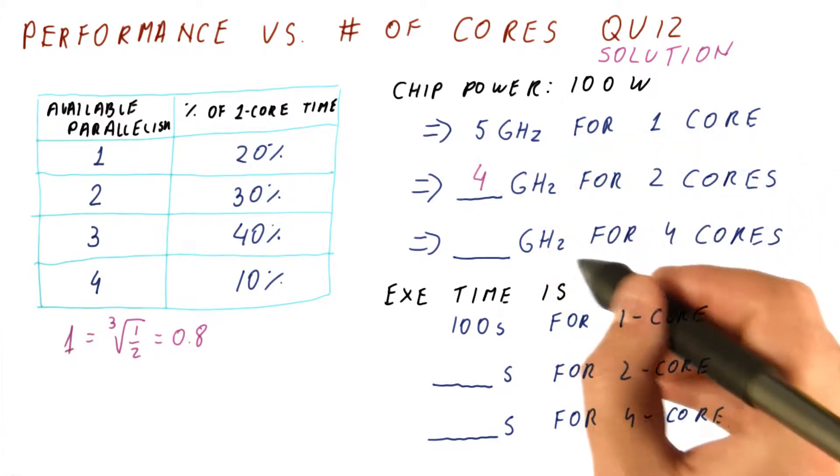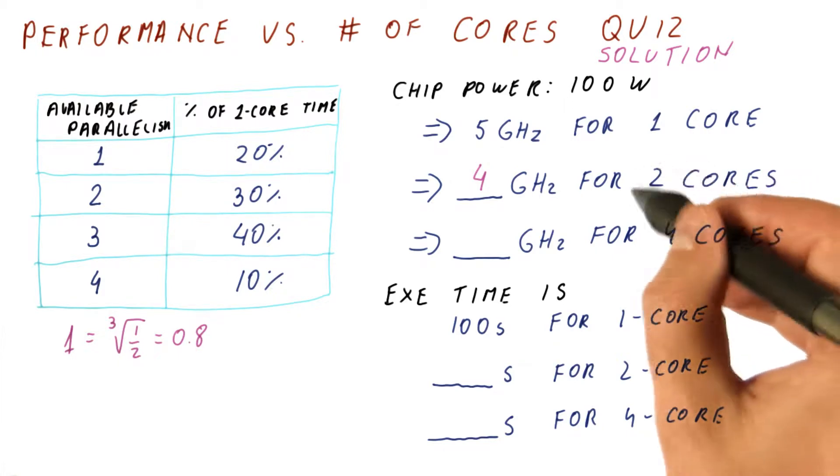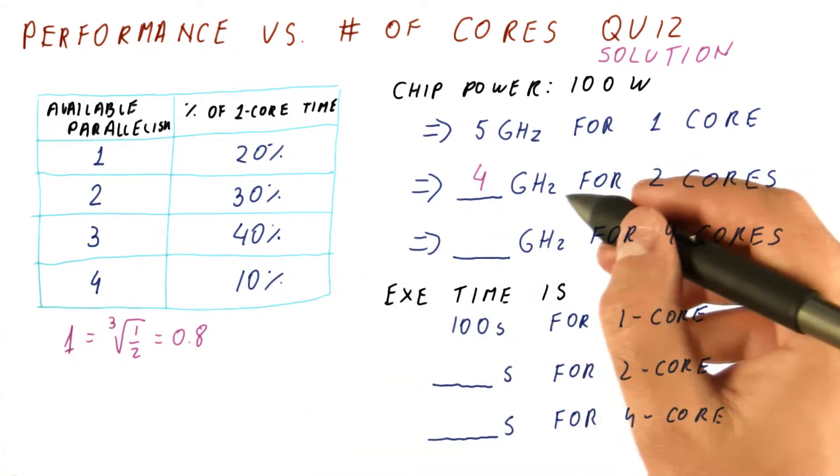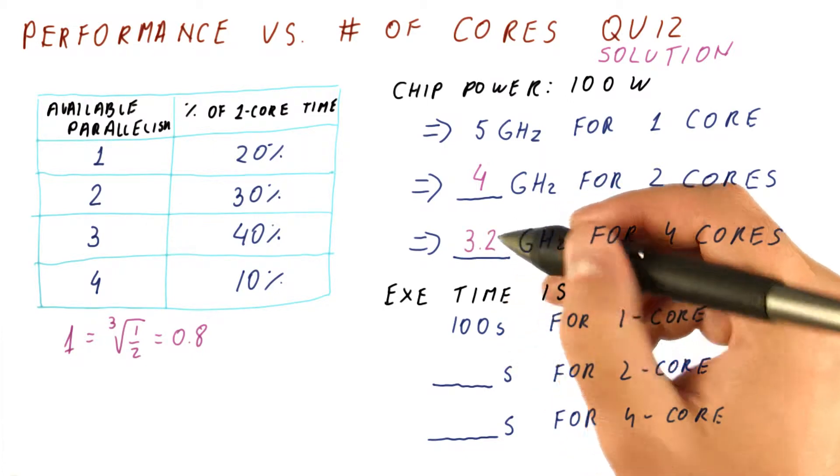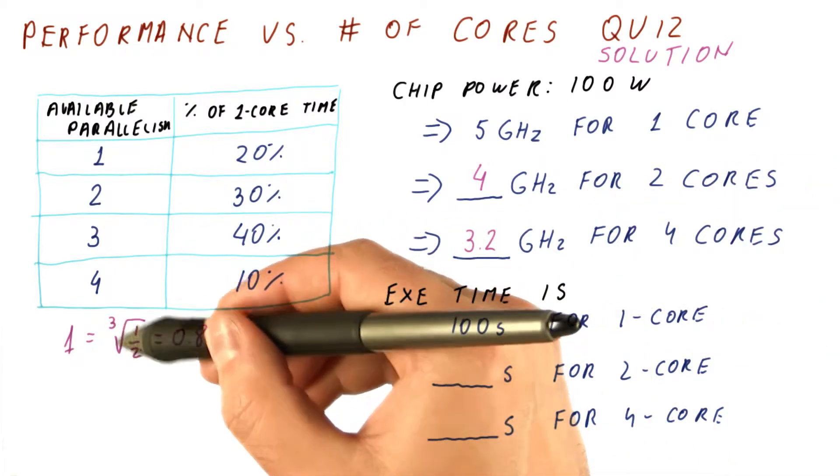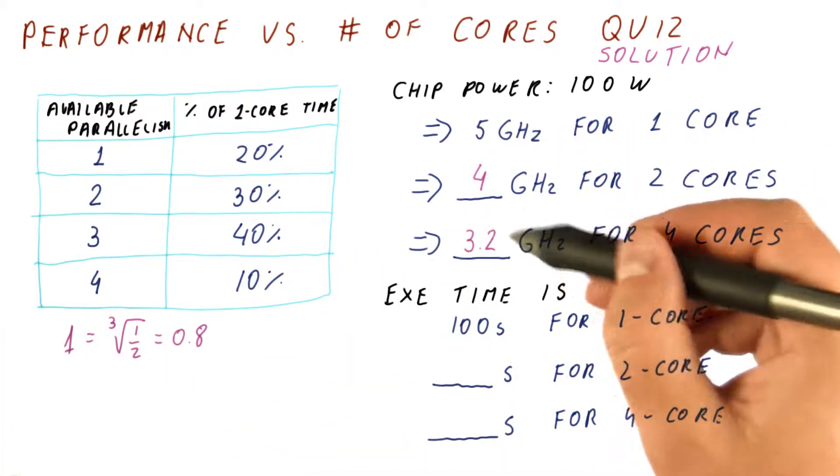The frequency with another doubling of the number of cores is that each gets half the power of these. So it's going to be 0.8 times this, which is going to be 3.2. Or we could do cubic root of one quarter of the original 5 gigahertz and get the same answer here.